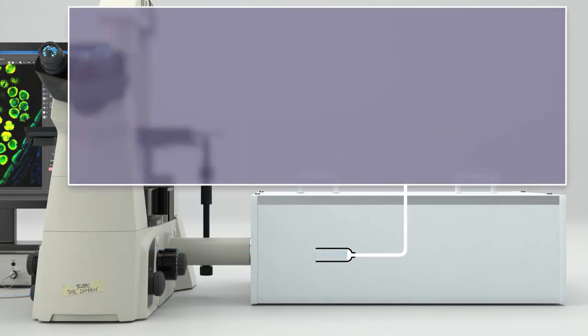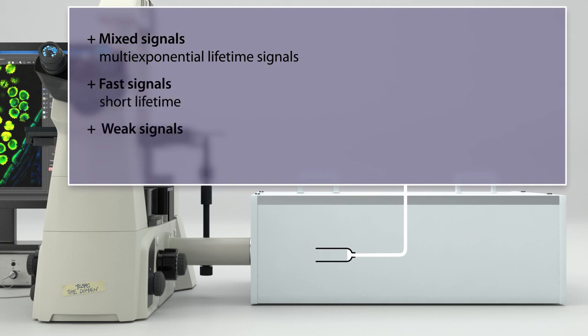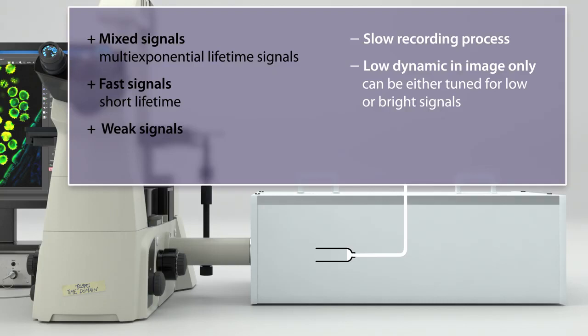This makes TCSPC suited for mixed, fast, and weak emission signals. On the downside, the recording speed of the process is slow due to its point scanning nature. One frame of a thousand times a thousand pixels can take up to several minutes. And because it depends on single photon counting, it has a limited dynamic range. To prevent under or over exposing, it has to be tuned for either dim or bright signals.